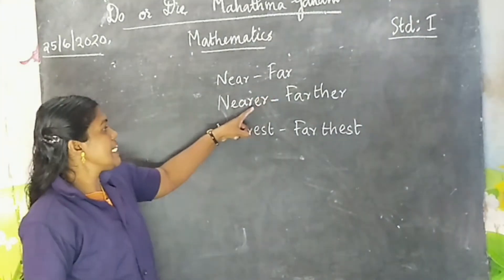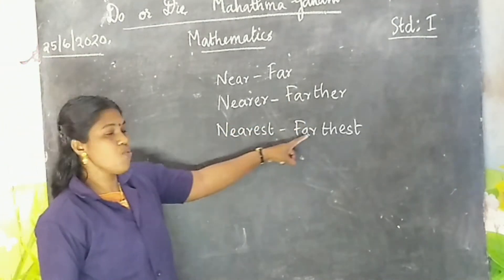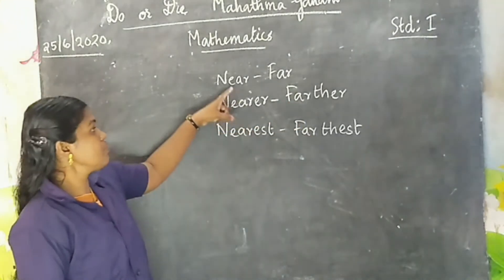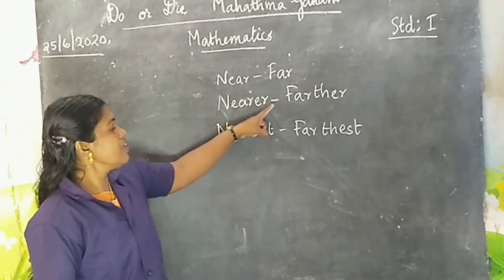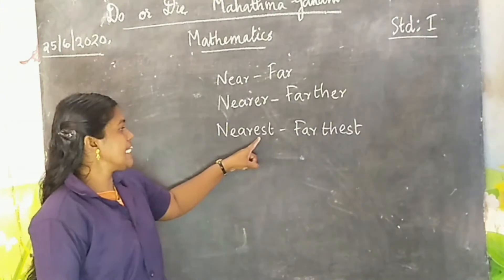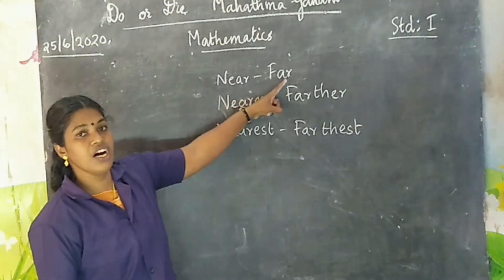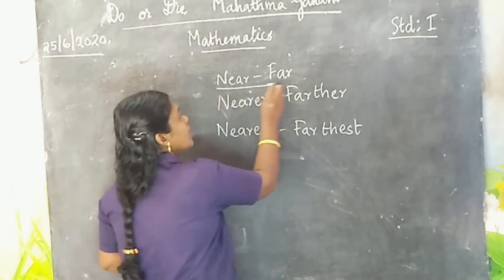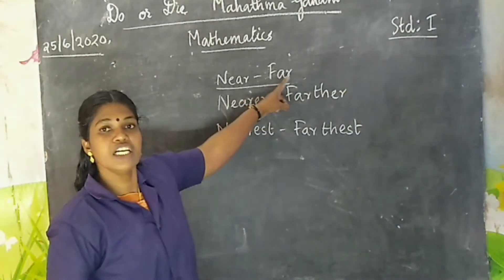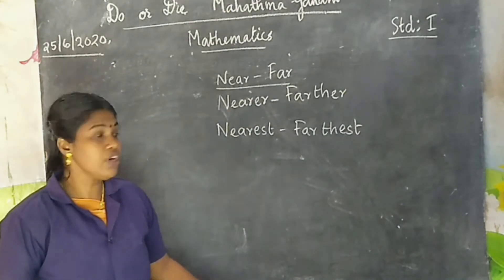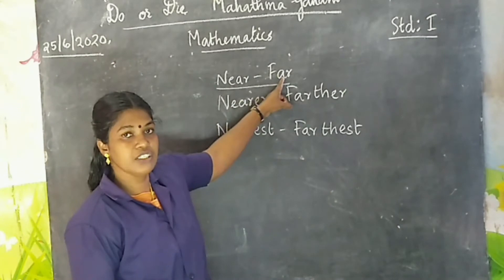Nearer, farther. Nearest, farthest. What is near and far? Near means adutth. Far means dhuri. Once more: near means adutth, far means dhuri.